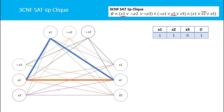We have converted the satisfiability problem to the clique problem. Since satisfiability is a known NP-hard problem, clique is also NP-hard. We already proved that clique is an NP problem. Since clique is both NP-hard and NP, we can say that the clique problem is an NP-complete problem.